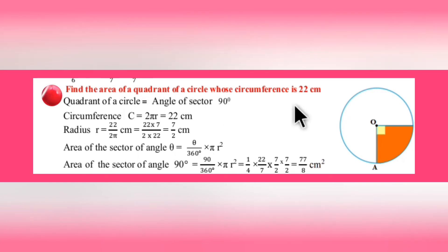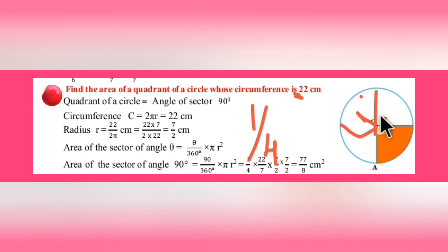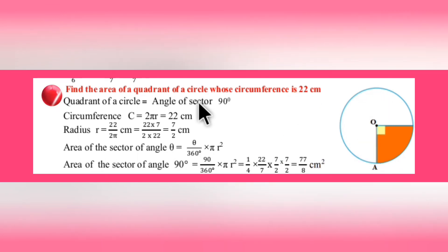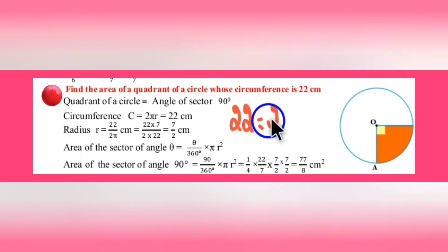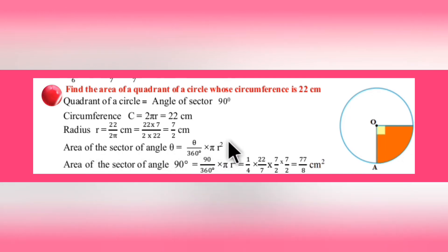Find the area of a quadrant of a circle whose circumference is 22 cm. A quadrant is one-fourth part of a circle. Given C = 22 cm, use 2πr = 22 with π = 22/7 to find r = 7/2. Then for the quadrant (90°), use Area = (90/360) × πr² and substitute r = 7/2 to get the answer.